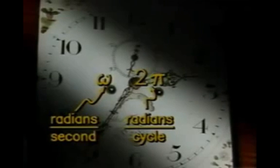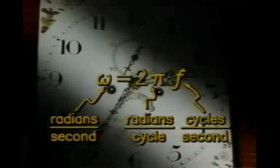The frequency is measured in radians per second. There are two pi radians in each complete cycle. Likewise, in the great clock in the sky, each cycle is divided into radians, as if the universe were an enormous circle.